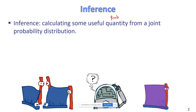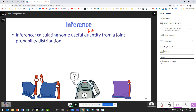Given a BayesNet, we can compute any joint probability, which means we can compute all entries in the joint probability distribution table. We don't construct the full table from scratch because it is huge — that's the main idea of BayesNet. It encodes the joint distribution in much smaller local conditional probability tables.